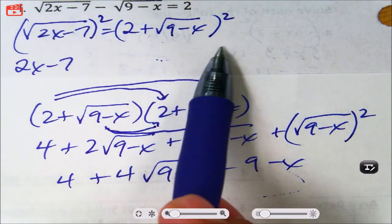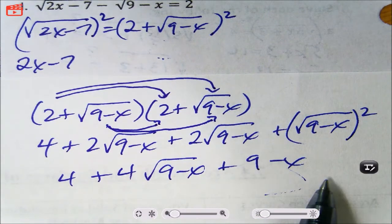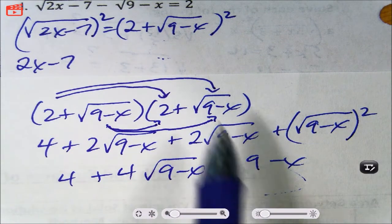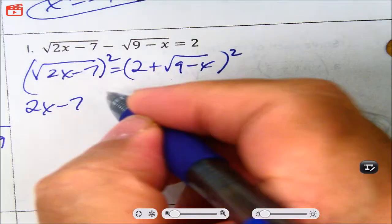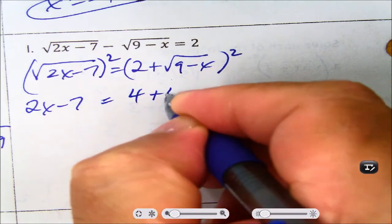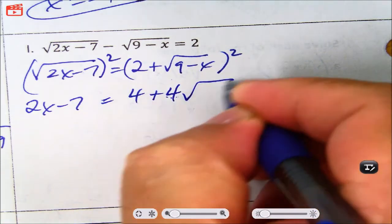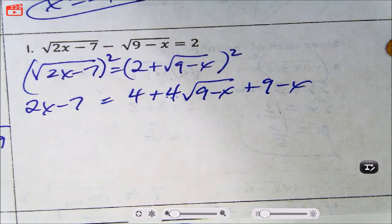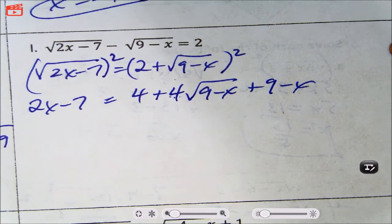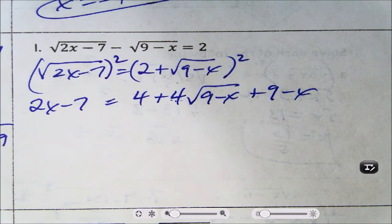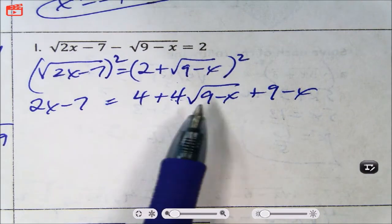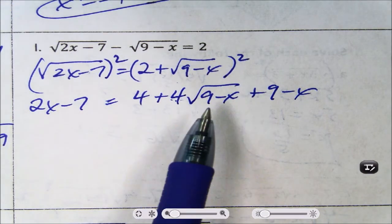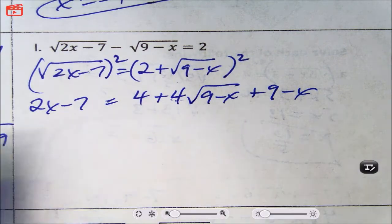The expression 2 plus square root of 9 minus x, squared, is equal to 4 plus 4 root 9 minus x plus 9 minus x. You might be wondering why I didn't simplify first — I forgot. Now we're down to one radical, which means we can isolate that one radical. Let's move some stuff around.